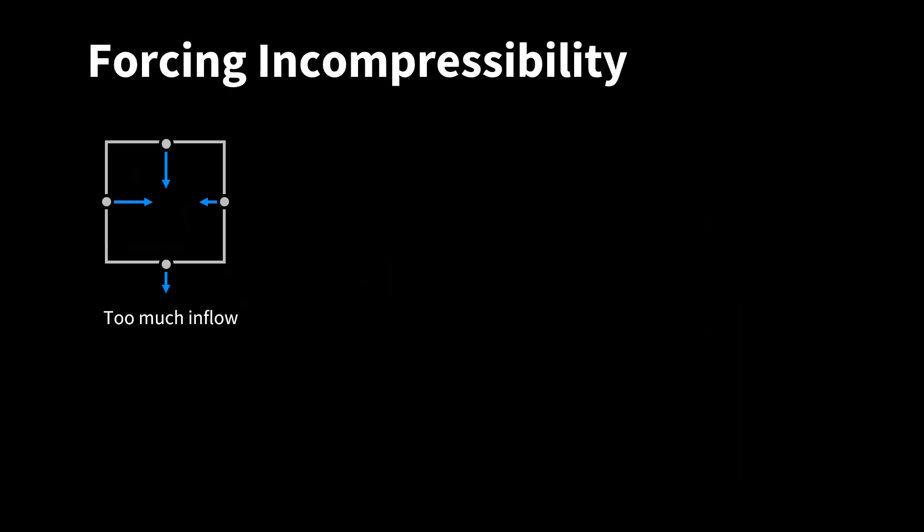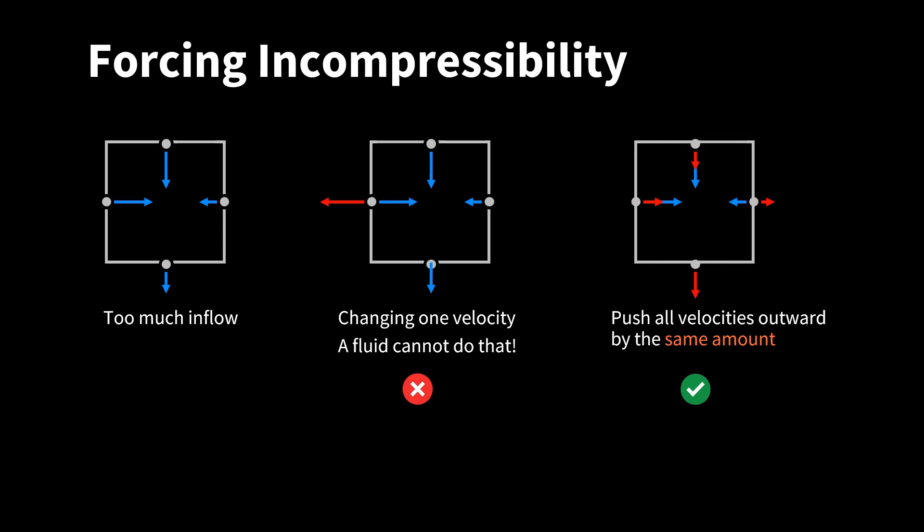Now how can we force incompressibility in the grid? Here we have a grid cell with too much inflow. What we could do is just modify one velocity component to make the inflow zero. However, a fluid cannot do that. We need to push all the velocity at the same time by the same amount. To get a global solution, we have to iterate through all the cells multiple times. We also have to consider boundary conditions. For this, have a look at tutorial number 17.